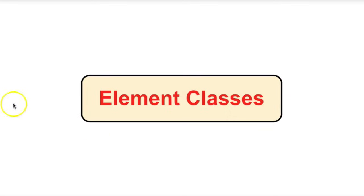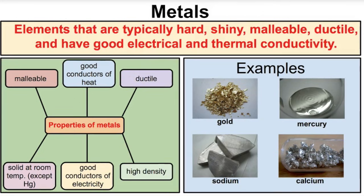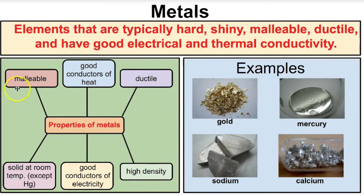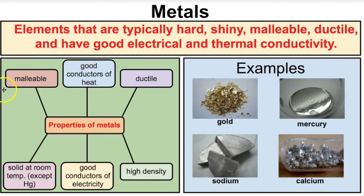Hey you guys, this is Mr. Millings and today we're going to learn about the different element classes on the periodic table. If you remember from an earlier video, we learned that everything to the left of that stair-step line with the exception of hydrogen is a metal, everything to the right is a non-metal, and anything directly on the stair-step line with the exception of aluminum and a couple others is a semi-metal or metalloid. Today we're going to talk about the physical and chemical properties of metals, non-metals, and metalloids, and then the alkali metals, alkaline earth metals, and several other groups.